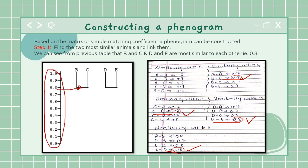I connected them at 0.8. Similarly D and E were connected at 0.8. This is your first step and this very step is written here as well.